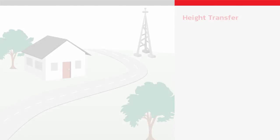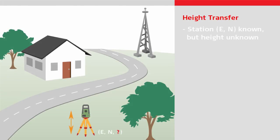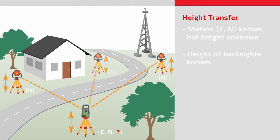The height transfer method should be used in the following case: if the point over which you will position the total station is known, the orientation of the total station is already correct or you don't care what the orientation is, and you simply need to establish the height of the total station by measuring to one or more target points. Before completing this setup, it is possible to look at the quality of the measurements to the targets and exclude any measurements which may be considered wrong or inaccurate.